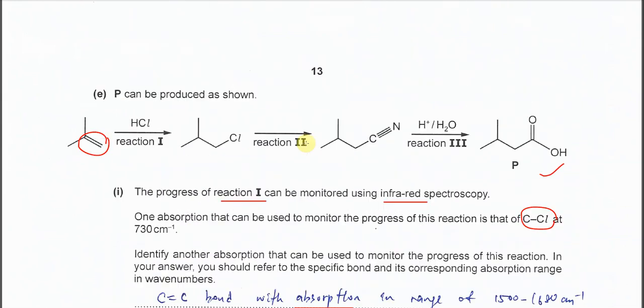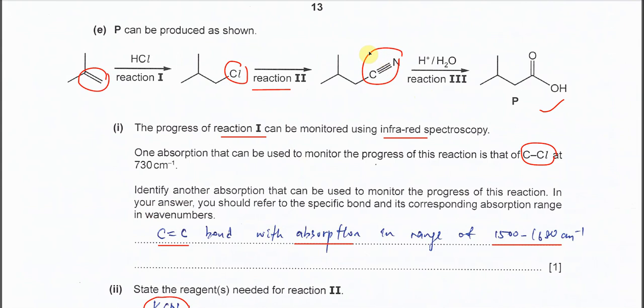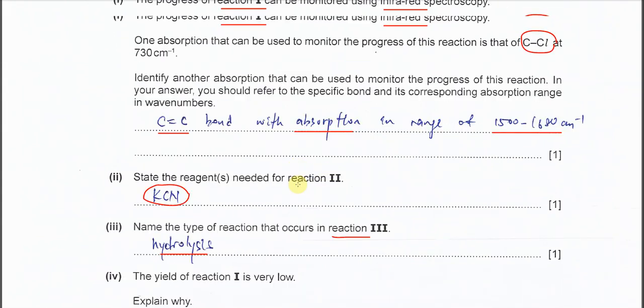Part 2, state the reagents needed for reaction 2, this one. Chlorine being substituted by the cyanide and it will form nitrile. So this one is very easy, the reagent needed must be KCN, the potassium cyanide. Name the type of reactions that occur in reaction 3, this one. The nitriles that form, it will undergo hydrolysis because it's acid with water and this carbon will form COOH. This carbon will form COOH like this. That's why the name of the type of reaction for the reaction 3 is hydrolysis.